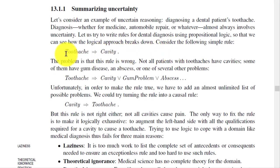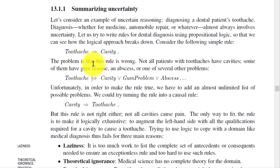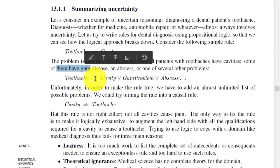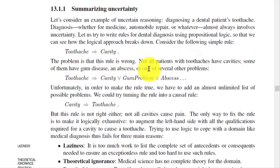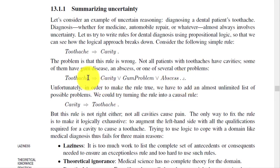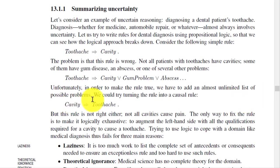There can be a simple rule: toothache K implies cavity. But this rule is wrong — not all patients with toothache have cavities. Some have gum disease, an abscess, or one of several other problems. So a problem can be a cavity, gum disease, abscess, or any problem that implies toothache K. To make the rule true, we would have to add an almost unlimited list of possible problems.